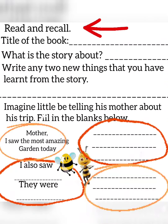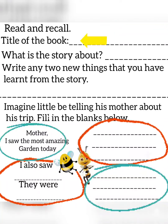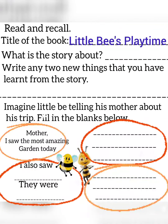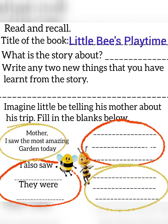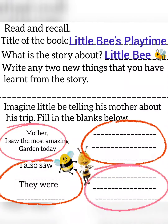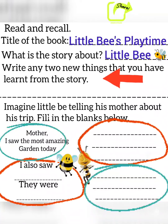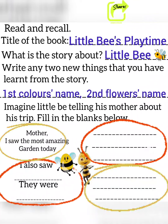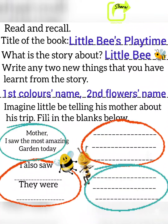Read and recall. Title of the book: Little Bees Playtime. What is the story about Little Bees? Write any two new things that you have learned from this story. First — colors' names. Second — flowers' names.